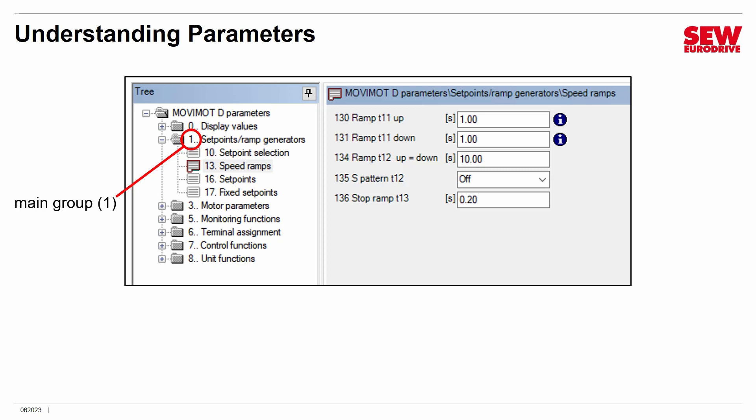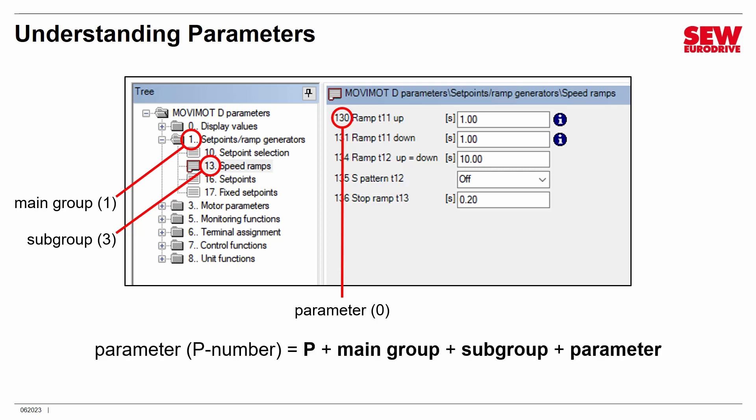Movimot has seven major parameter groups numbered 0 through 8, with some missing numbers in that range. These numbers identify what is called the parameter's main group. For example, 'setpoints and ramp generators' is group number 1. Underneath that group are additional groups and individual parameters. The second digit is the subgroup — for example, speed ramps are in subgroup 3, which is part of main group 1. The third digit is the actual parameter number. So for ramp T11 up, the parameter number is 0. The full identifier is parameter 130, or P130.